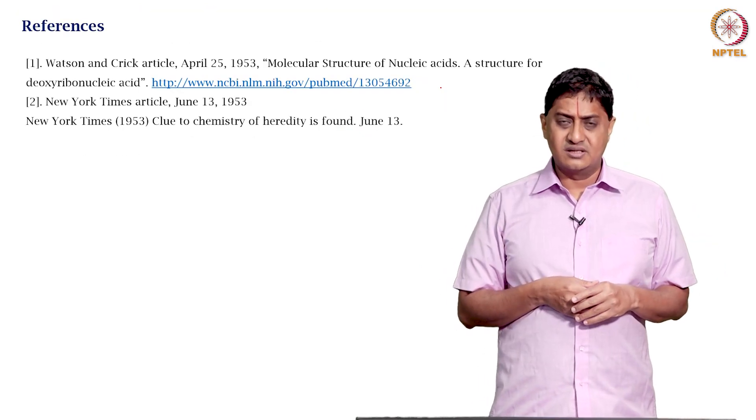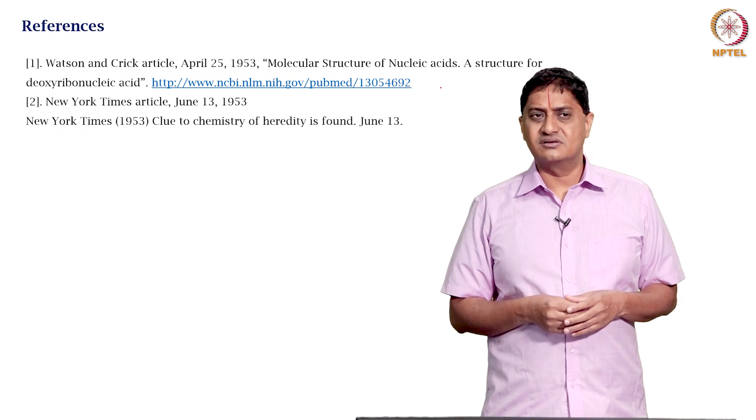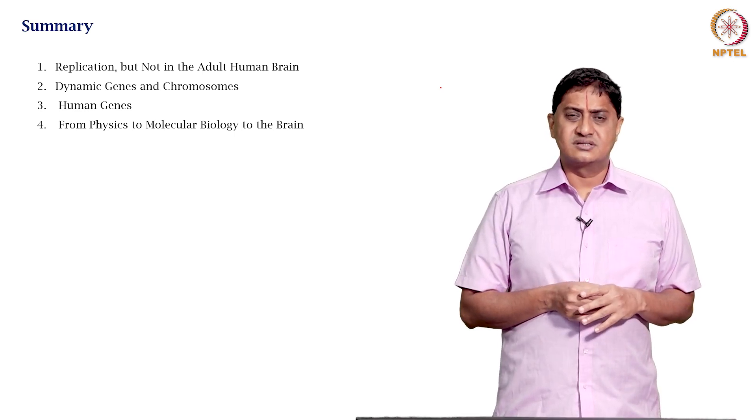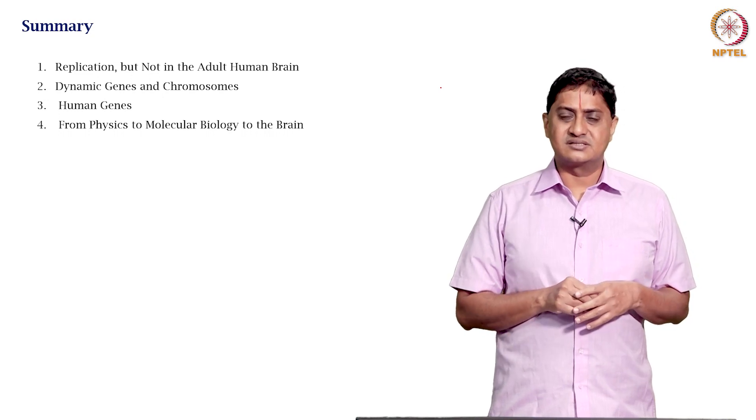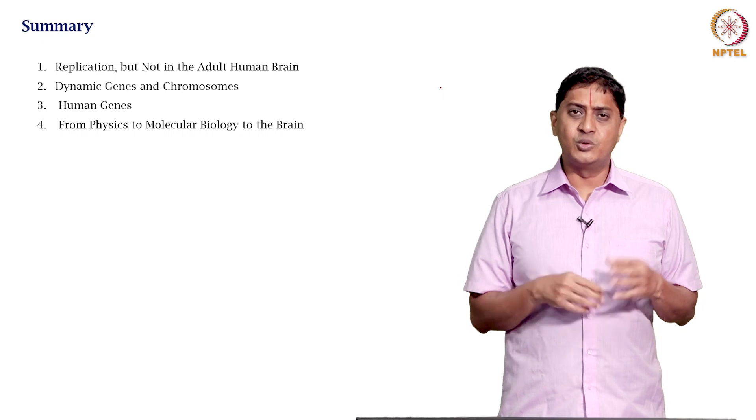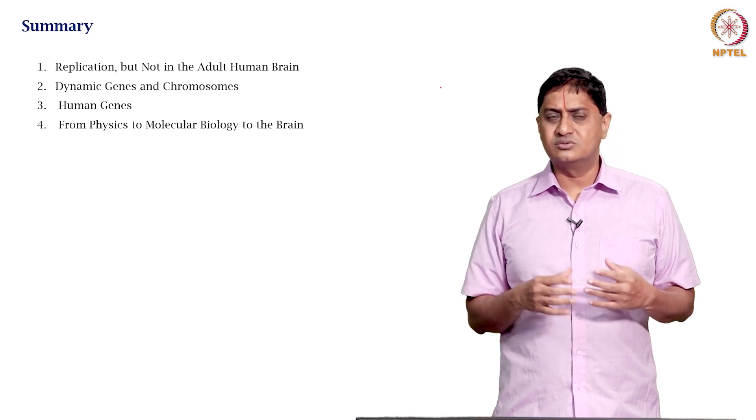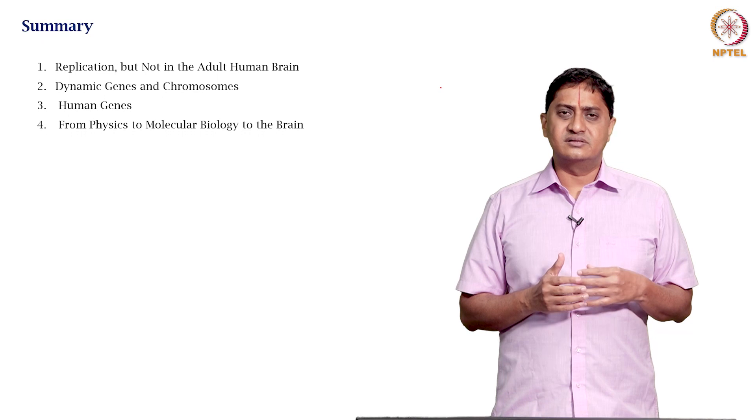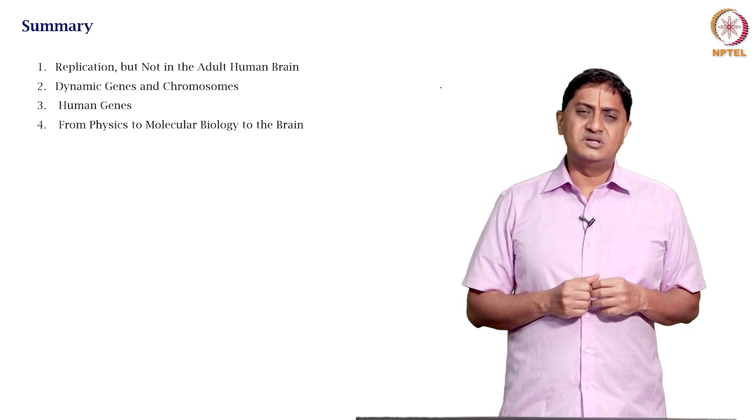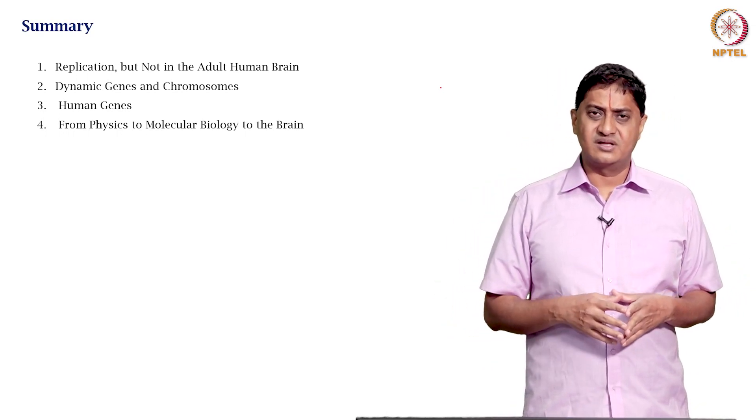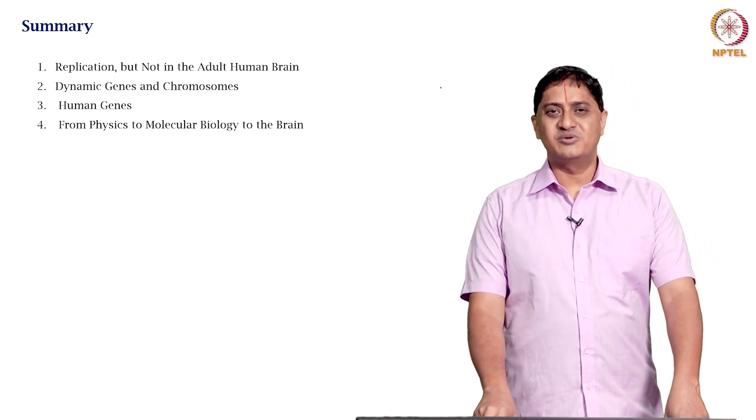These are some of the references that we used and I recommend these for you to read. With this we come to the end of this video. In this video, we discussed how replication happens but not in the adult human brain, the nature of genes as dynamic as discussed by McClintock, how human genes work, and how we evolved from physics to molecular biology to brain. The idea that heredity was explainable only using biological mechanisms—this is a biological phenomenon and not using classical physics. Thank you very much for your attention.